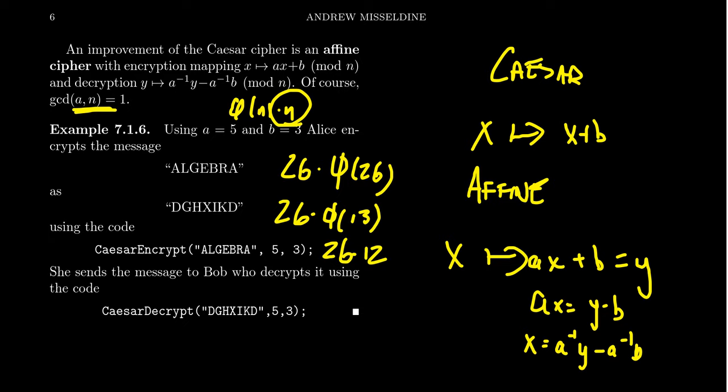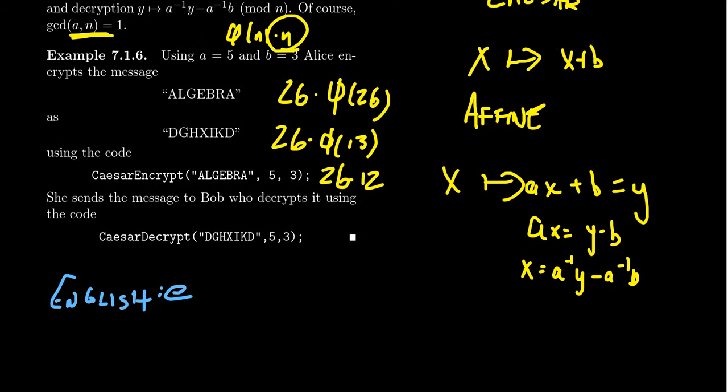Unfortunately, this is still considered a weak crypto system for the following reason. Since different characters in the language appear with different frequencies. So, for example, if you're in the English language, just using the language I'm speaking right now, I hope that's English. The letter E, for example, it shows up in a random word with a probability of 12.702%. So about 13% of all letters in the English alphabet are going to be the letter E.